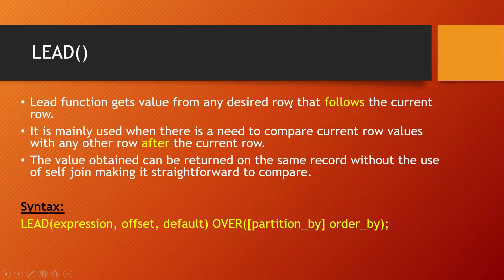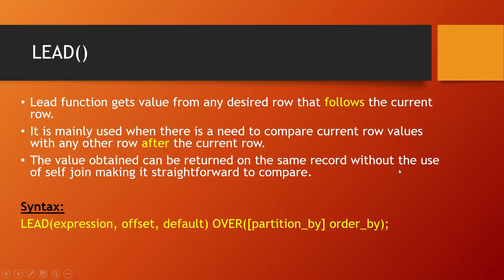Lead. The lead function gets a value from any desired row that follows the current row — just the opposite of the lag function. It is mainly used when there is a need to compare current row values with any row after the current row. The value obtained can be returned on the same record without the use of a self-join. The syntax is the same as lag, where the offset means each record will follow after an offset.